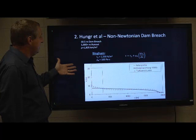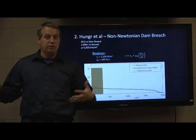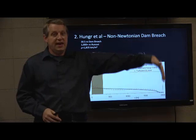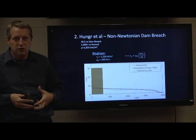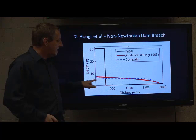We also did an analytical analysis using the Hunger analytical model. The Hunger analytical model considers a 30-meter impoundment of high-concentration material released to run out — where should the front end up, where the internal strength of the material is stronger than the shear stress? They computed how far that should be, and here RAS shows the analytical result and RAS's computed result. We're modeling the front and the runout pretty precisely.